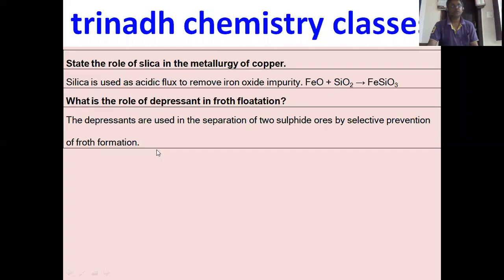What is the role of silica in the extraction of copper? Silica is used as an acidic flux to remove iron oxide impurity. What is the role of depressants in froth flotation? Depressants are used in the separation of two sulfide ores by selective prevention of froth formation. Other important questions include calcination, roasting from the metallurgy chapter, standard hydrogen electrode, and pig iron vs. wrought iron.